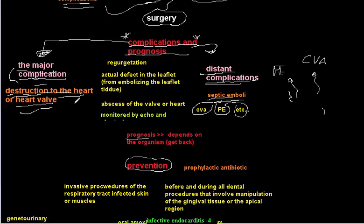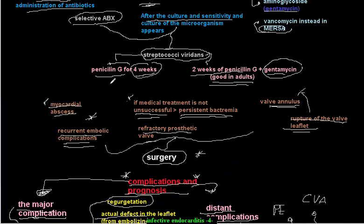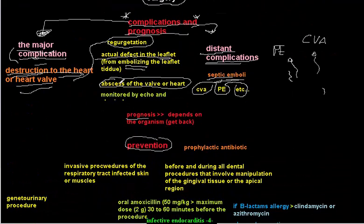The destruction of the heart or heart valves causes regurgitation or actual defects in the valve leaflets. The valve itself may become fragile and embolize. We may also see valvular or myocardial abscess — which is an indication for surgical treatment — as well as regurgitation and actual valve defects. These local complications can be monitored by echocardiogram or physical examination.